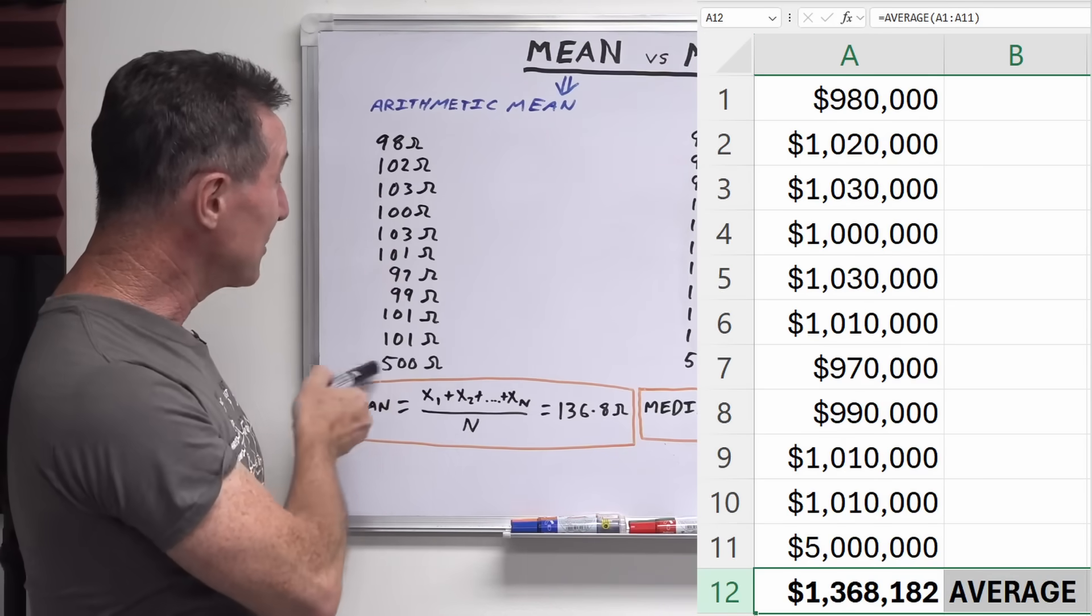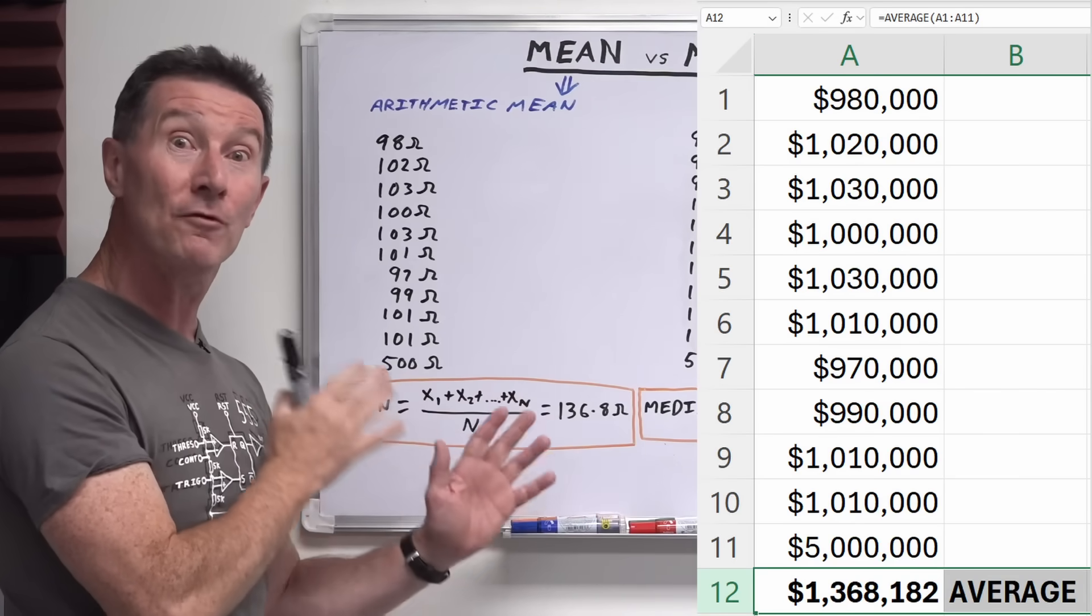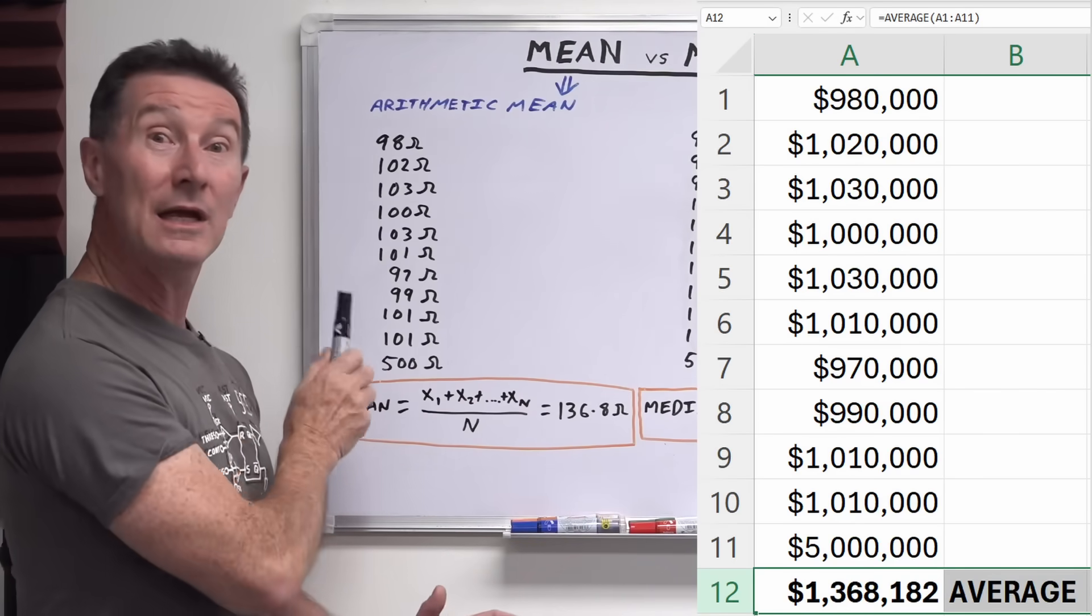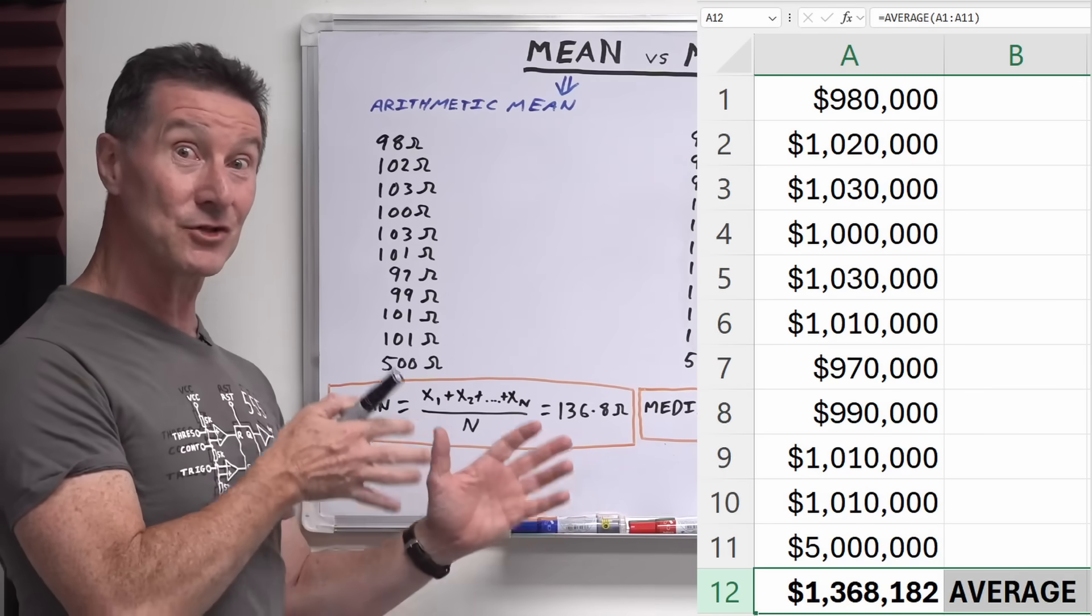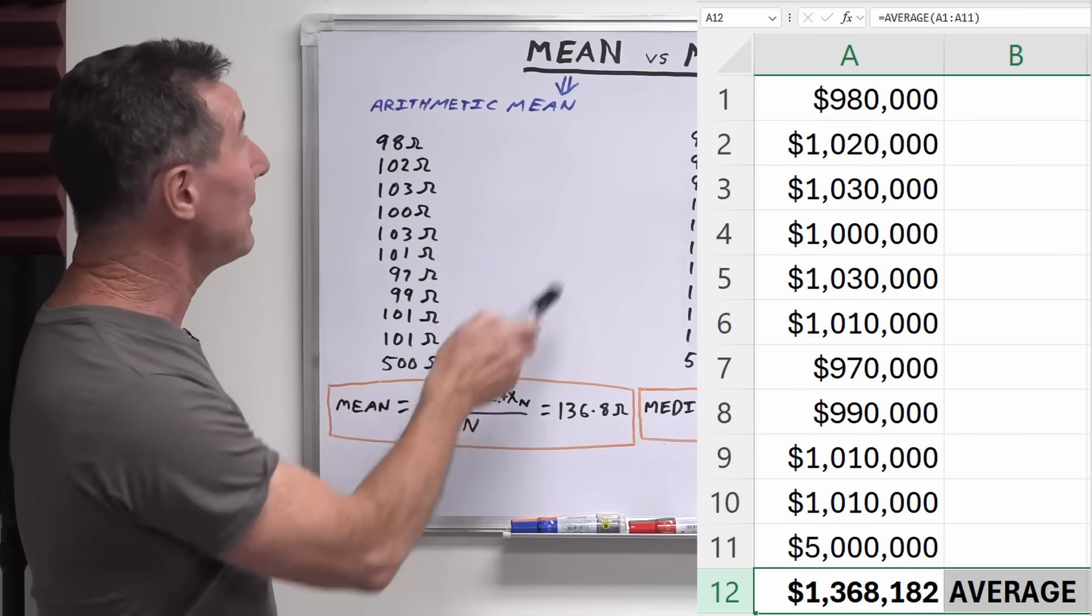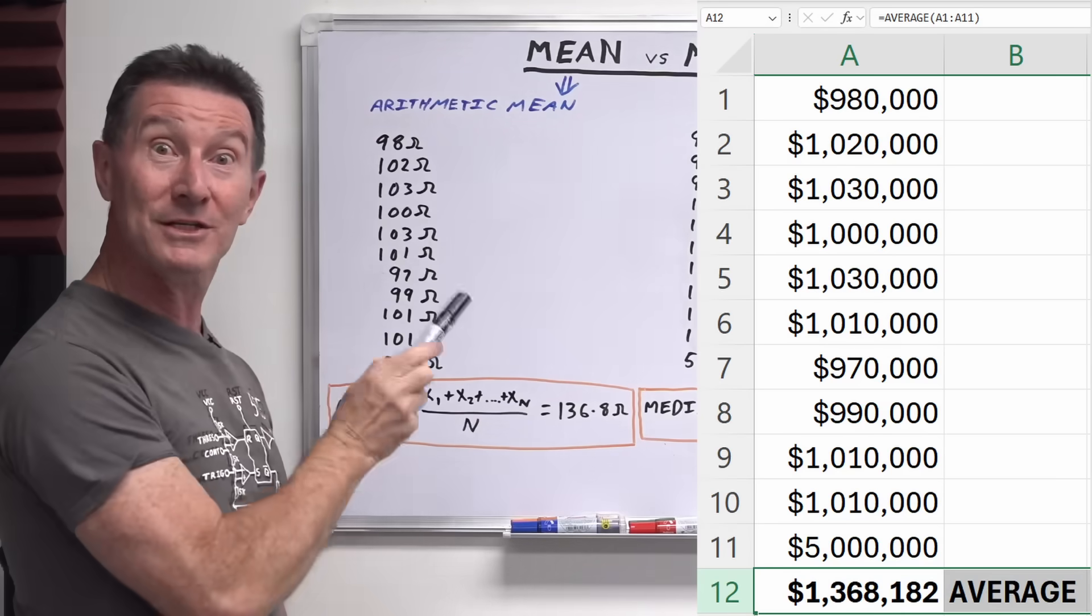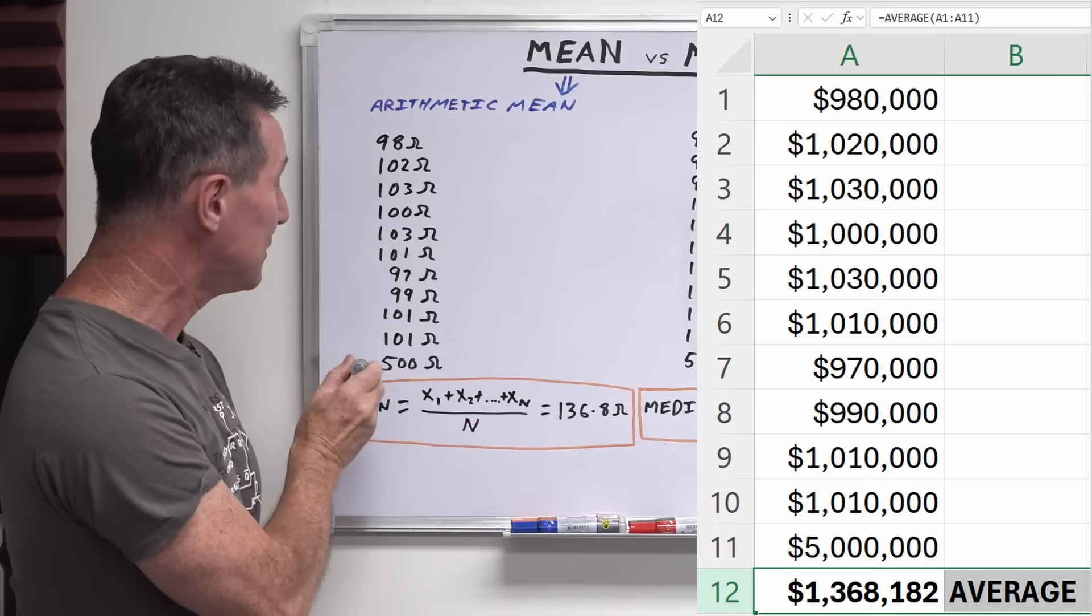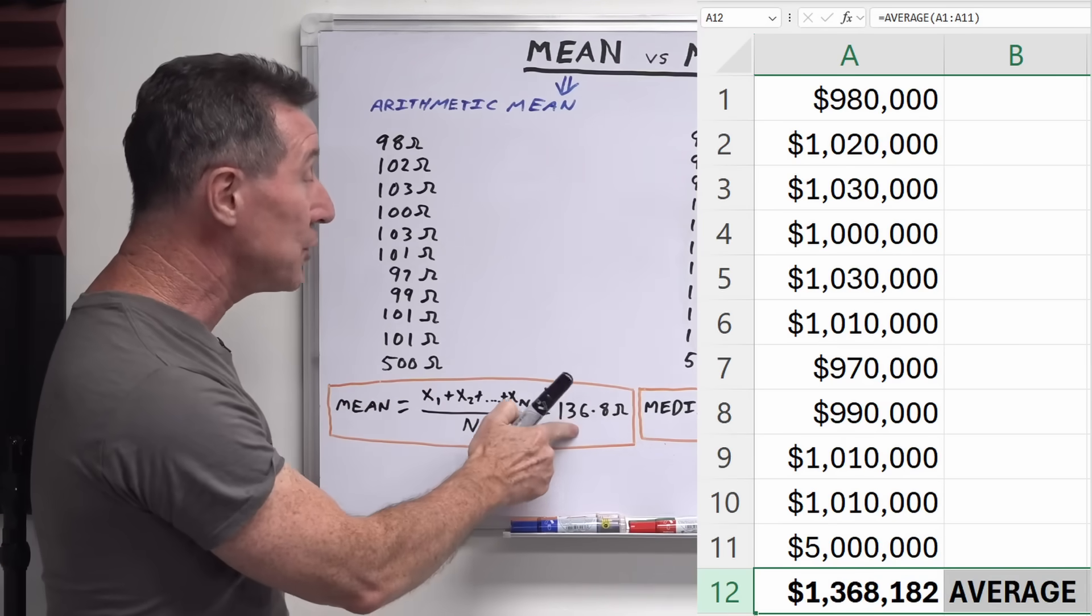Well, that's kind of like an outlier but it is an actual real value. So you've got to include it in your data set. So what happens if the media or the real estate agent is trying to tell you that house prices are going to the moon in your suburb?